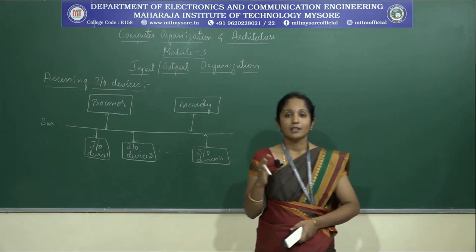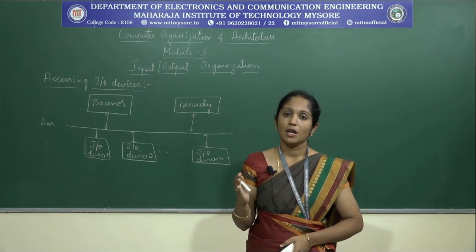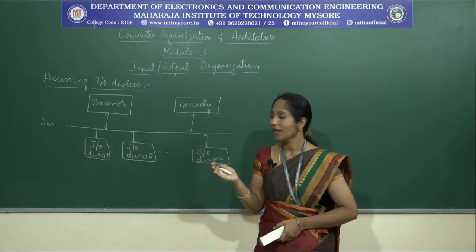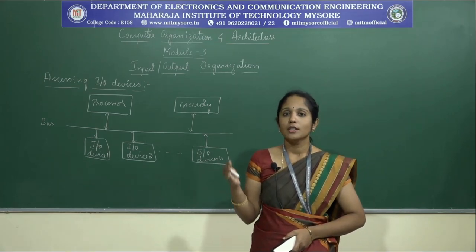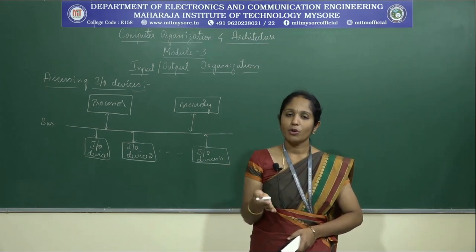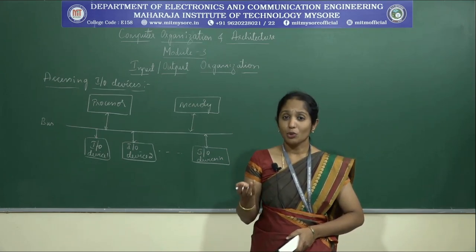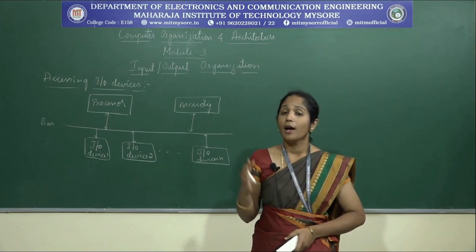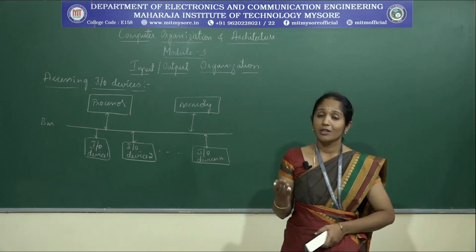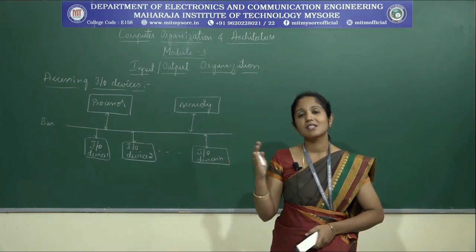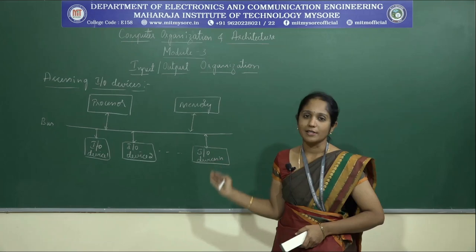If we consider performance, particularly speed: the processor executes millions of instructions per second, and memory is also a very fast device compared to I/O devices. A keyboard or mouse is slow compared to output devices like a printer or display. A keyboard is restricted by the number of characters a user can press per second, while a printer can print thousands of lines per second. There is a huge difference in speed of operation across these devices.